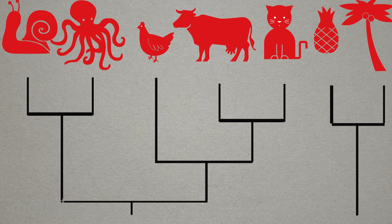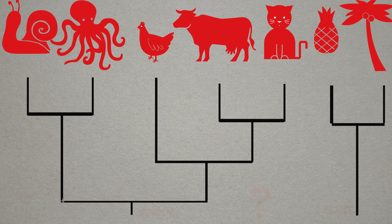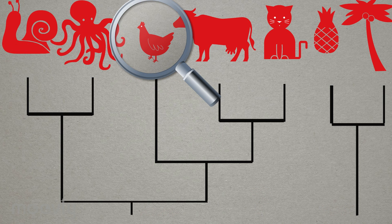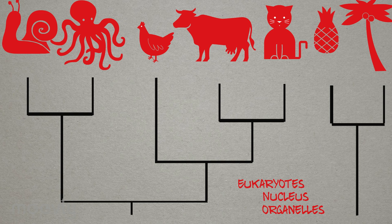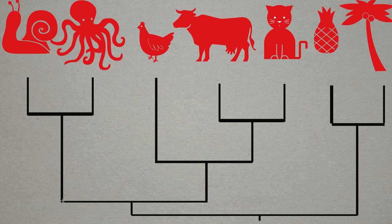It looks like we are left with two clades — an animal clade and a plant clade — but did they ever share a most recent common ancestor? If they did, there should be some evidence left behind. If we look at the cellular level, traits begin to emerge: plants and animals are both eukaryotes. Their cells have nuclei enclosed in a membrane, and they contain other membrane-bound organelles like mitochondria, which separate them from other groups like bacteria. This evidence of shared ancestry allows us to connect our last two clades together.